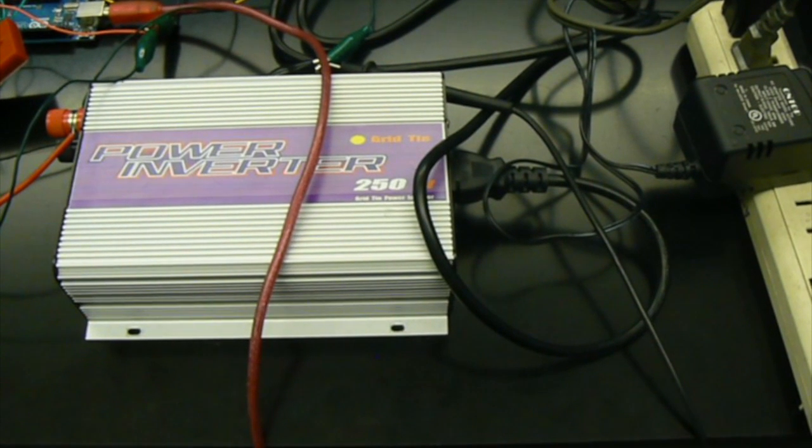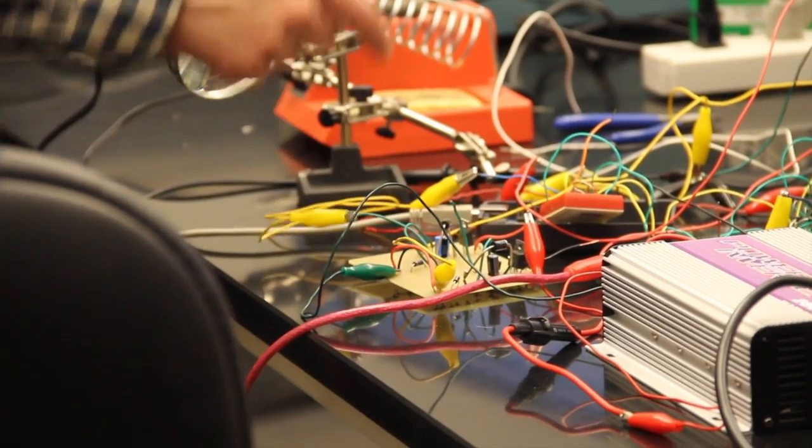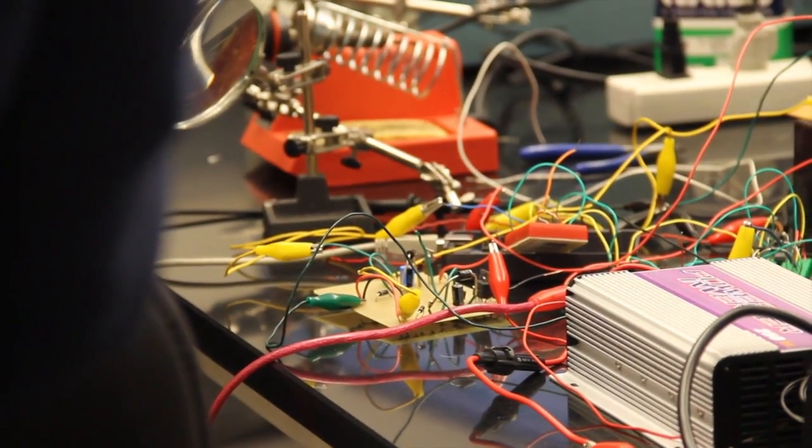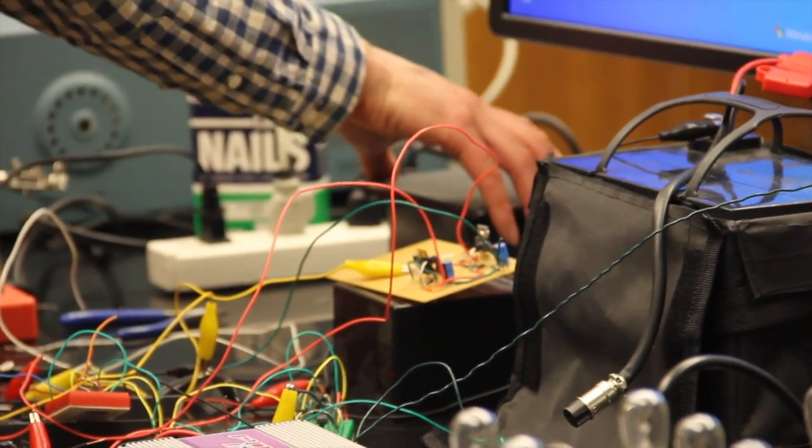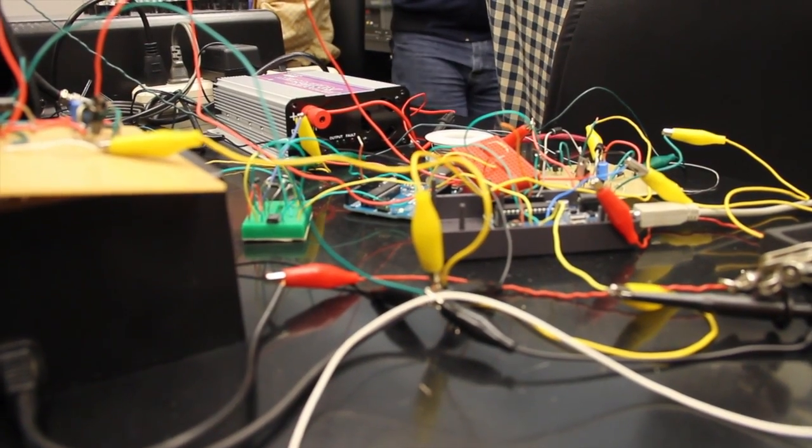And we've designed a pulse-width modulation control system that allows us to increase or decrease the amount of power we want to apply to the grid or the amount that we want to charge from the grid based on the rate of consumption from the grid off of the power supply.